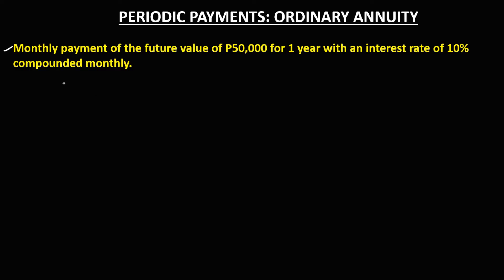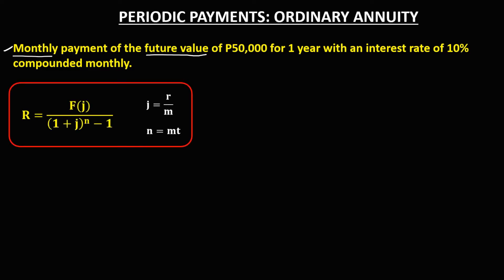To find the periodic payment or the monthly payment, since the given is a future value, we're going to use this formula to find the periodic payment. From this problem, the given are: future value is P50,000, time is one year, and interest rate is 10%. Since it is compounded monthly,